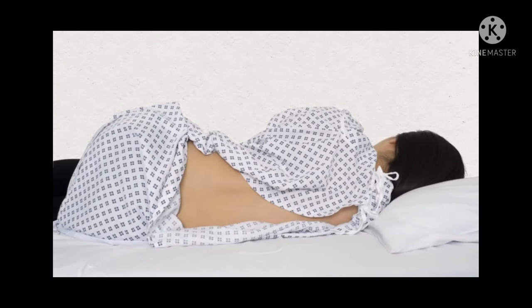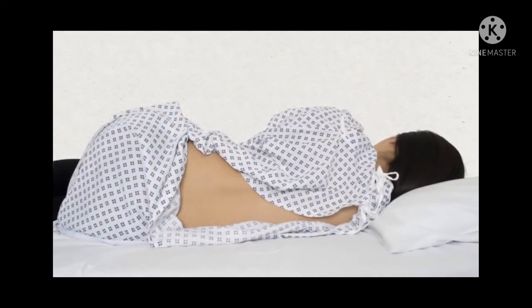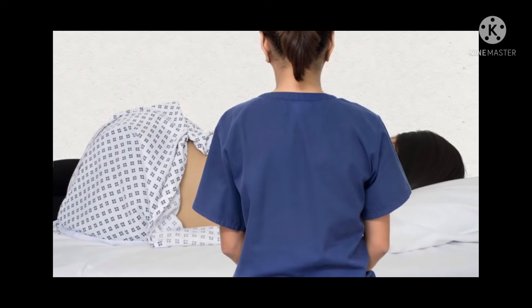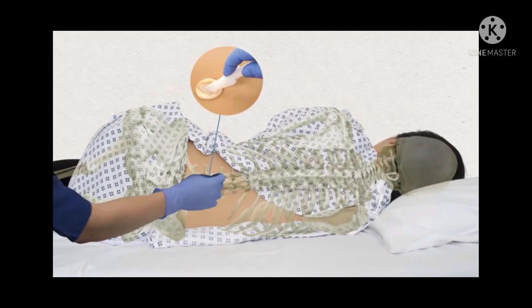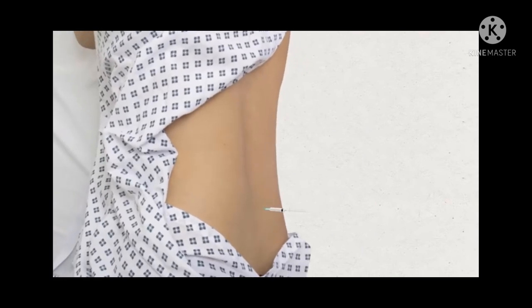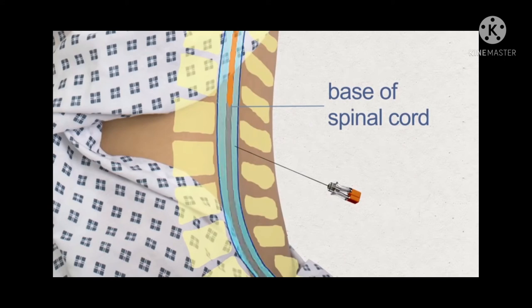A small sample of CSF is collected using a long, thin needle. You are asked to orient yourself in one of two positions. You will receive a local anesthetic to numb the skin in the area where the CSF will be collected, and the needle goes in between two vertebrae — the bones that surround your spinal cord and make up your spine. They'll take a tablespoon or two of fluid for testing. It usually takes about 30 to 45 minutes, and you'll be asked to rest afterward.